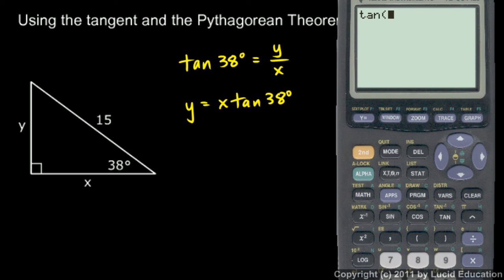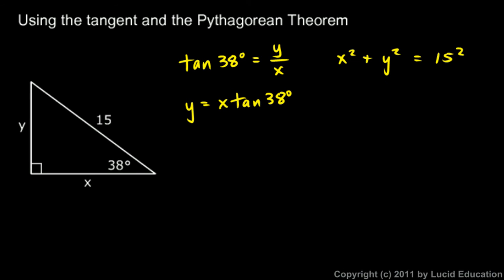Let's do that on the calculator. We can find the tangent of 38 degrees. Tangent of 38 degrees is 0.7813. I'll give four digits of accuracy there, so y is going to be 0.7813 times x.